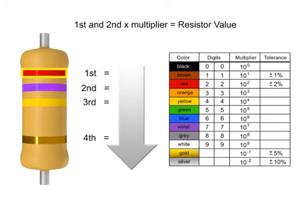The first band is red, so the first digit value is 2. The second band is violet, so digit 2 is 7.